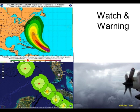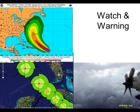A Hurricane Watch means that a hurricane may hit within 24 to 48 hours. A Hurricane Warning means the hurricane is expected to hit in less than 24 hours. To determine watches and warnings, they fly an airplane through the storm to get exact measurements, and then they can make a best-guess track as to where they think the hurricane is going to go.